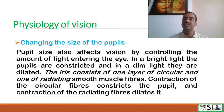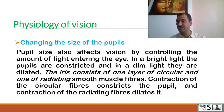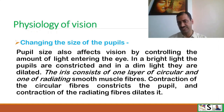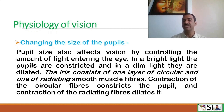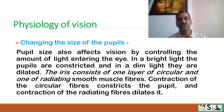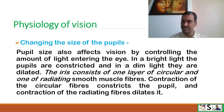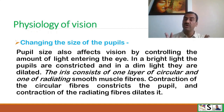Second is changing the size of the pupil. Pupil size also affects vision by controlling the amount of light entering the eye. In bright light, the pupils are constricted, and in dim light, the pupils are dilated. The iris consists of one layer of circular and one layer of radiating smooth muscle fibers. Contraction of circular fibers constricts the pupil, and contraction of radiating fibers dilates the pupil.